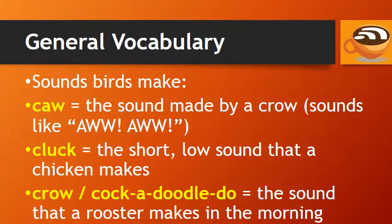The word cluck refers to the short, low sound that a chicken makes. And crow, or cock-a-doodle-doo, is the sound that a rooster makes in the morning.